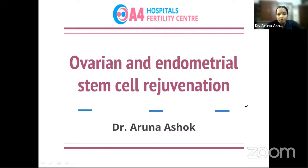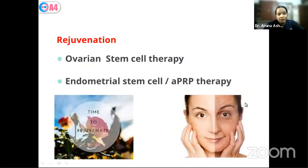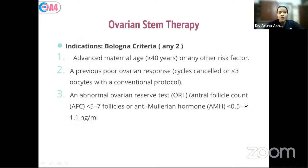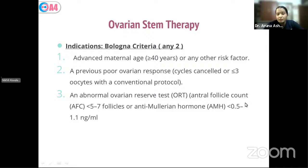Today we are looking at ovarian stem cell therapy, endometrial stem cell therapy, and activated PRP therapy. For ovarian stem cell therapy, the patients indicated for counseling are those fulfilling two criteria proposed by the Bologna criteria: advanced maternal age over 40, previous poor ovarian response with cycle cancelled or ≤3 oocytes on conventional protocol, or abnormal ovarian reserve — antral follicle count ≤5–7 or AMH <0.5–1.1.